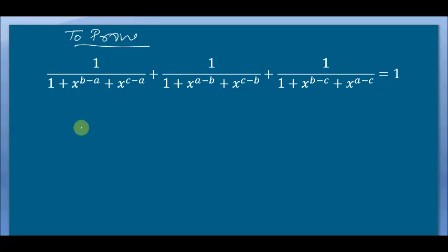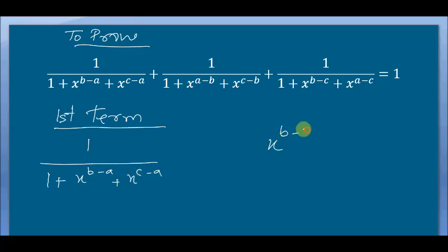Let me take the first term here. So the first one is 1 by 1 plus x^(b-a) plus x^(c-a). What I do here is just write this term like this.